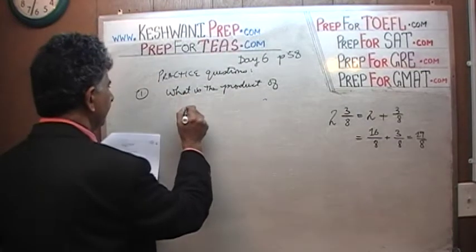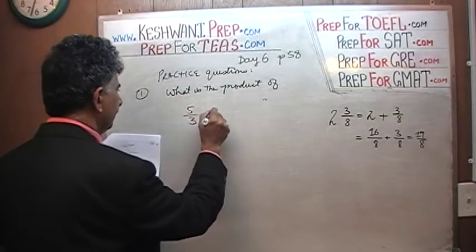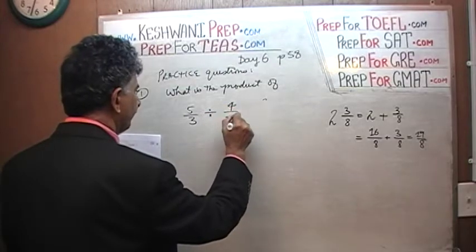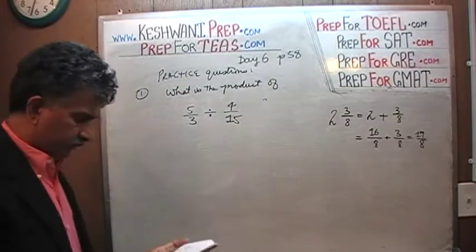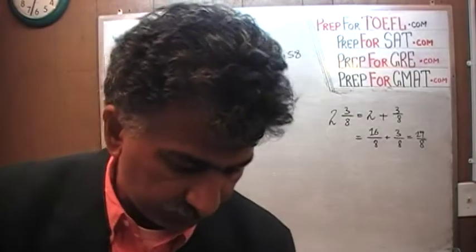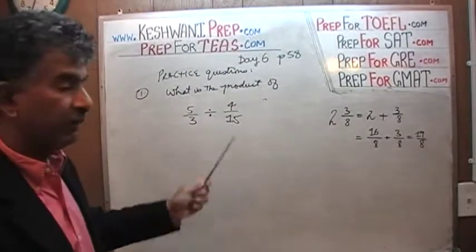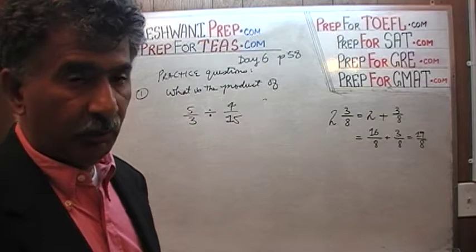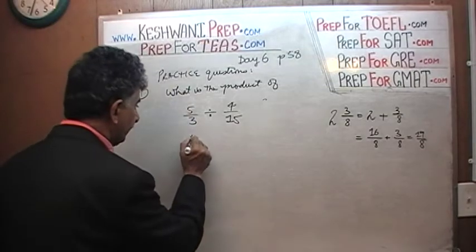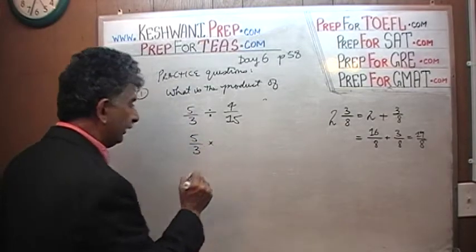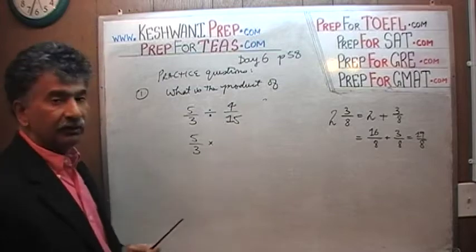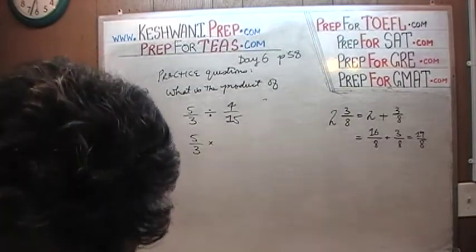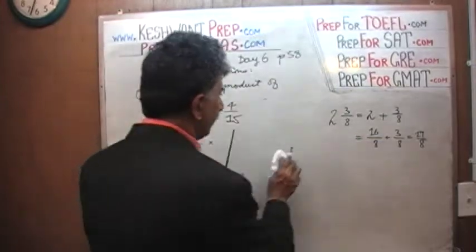Number two: we have five-thirds divided by four-fifteenths. We know that when we have one fraction being divided by another fraction, all we do is take the first fraction and multiply it by the reciprocal of the second fraction.